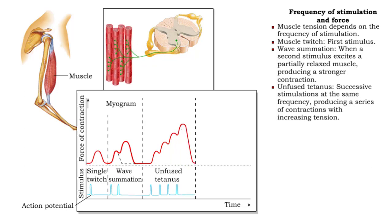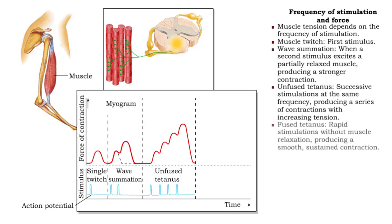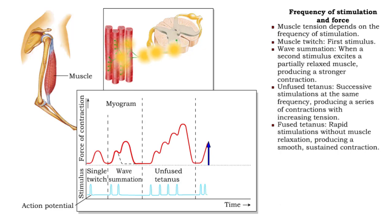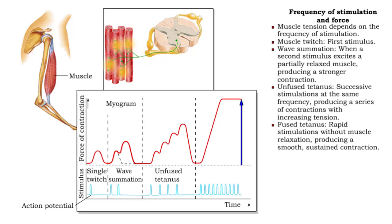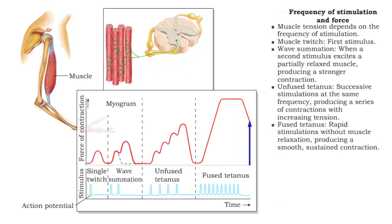If the frequency of stimulations increases to a point where the muscle does not have a chance to partially relax between twitches, the muscle will exhibit a smooth sustained contraction called complete or fused tetanus.